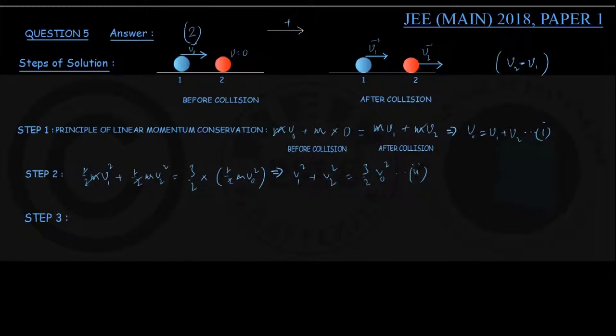In step number 3, starting with equation number 2, we can write the left-hand side as (v1 plus v2) whole squared minus 2 v1 v2 equals 3 by 2 v0 squared. But v1 plus v2 equals v0 from equation number 1, so we can write v0 squared minus 2 v1 v2 equals 3 by 2 v0 squared.